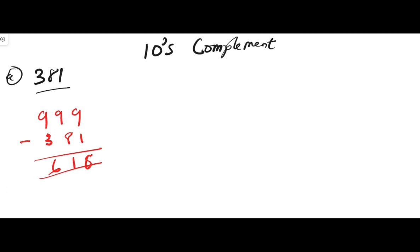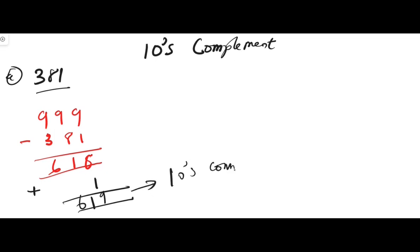The next thing is to add one. So 618 plus one gives us 619. This is the ten's complement, and 618 is the nine's complement.